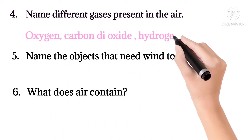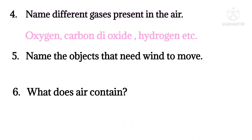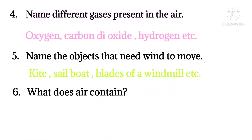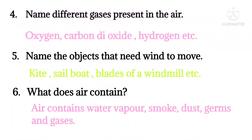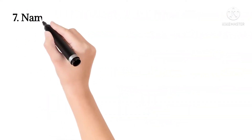Question 5: Name the objects that need wind to move. Kite, sailboat, the blades of a windmill, etc. Question 6: What does air contain? Air contains water vapour, smoke, dust, germs, gases, etc.